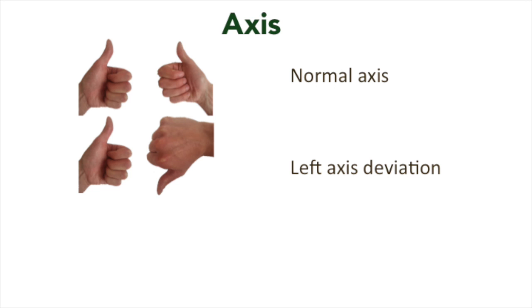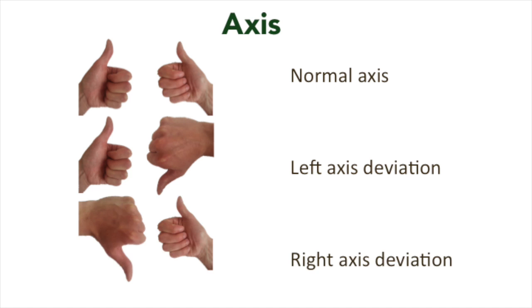If left is up and right is down, then this would be left axis deviation. If right is up and left is down, then we have right axis deviation.